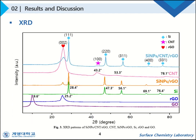Next are the XRD patterns. The GO showed a strong and narrow peak. However, the RGO showed a broad peak corresponding to graphene. The characteristic peak of the GO disappeared after the thermal reduction. This result indicates that the GO was successfully reduced to RGO.